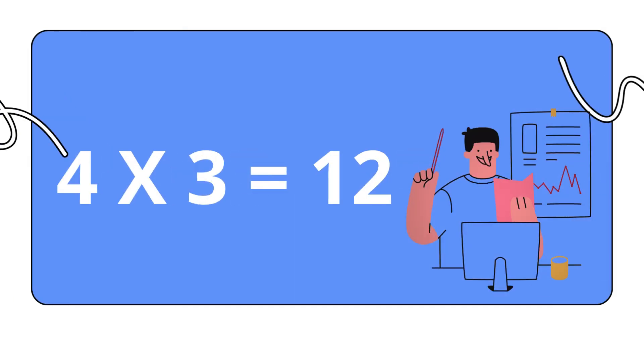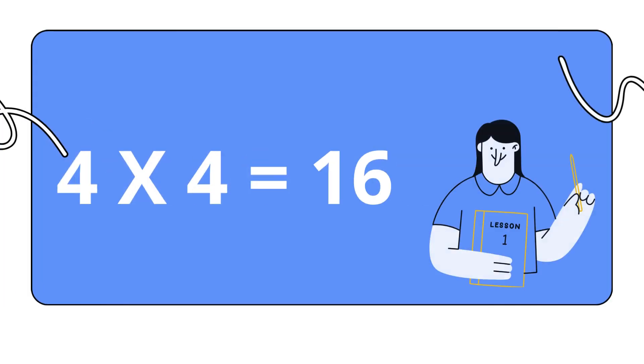Four threes are twelve. Four threes are twelve. Four fours are sixteen. Four fours are sixteen.